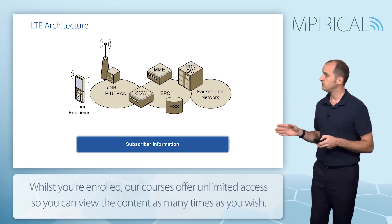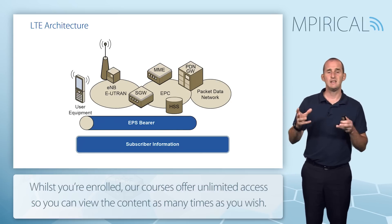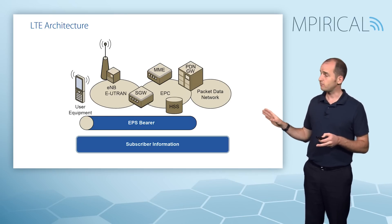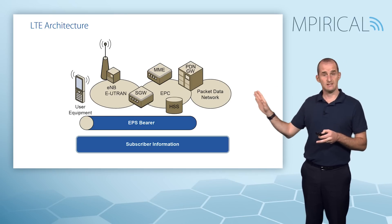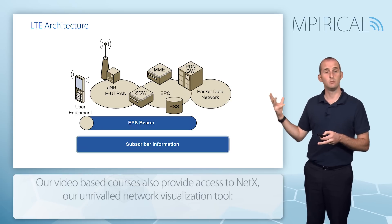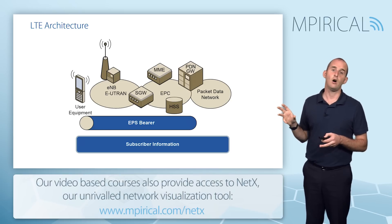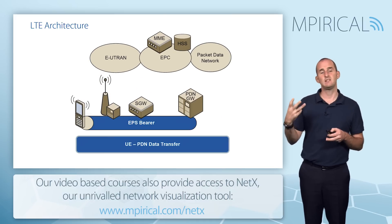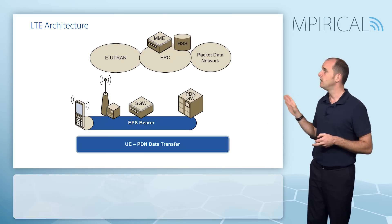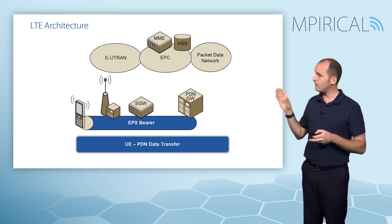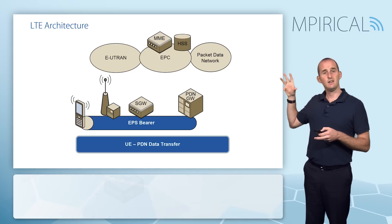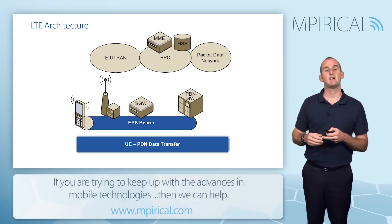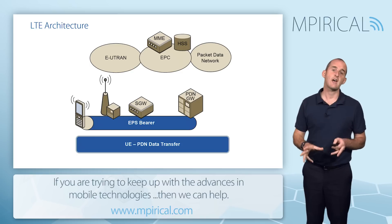In terms of the actual data bearer, the terminology is the Evolved Packet System Bearer. The Evolved Packet System is the end-to-end network, which includes the mobile, the RAN, and the core. The devices involved in the data bearer are the E-Node B, the Serving Gateway, and the PDN Gateway. Every subscriber attached to the LTE network will have one or more EPS bearers for their traffic.